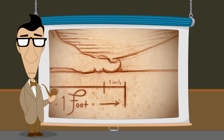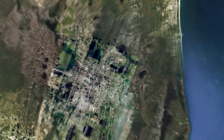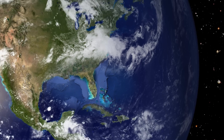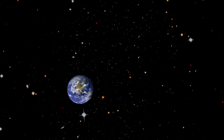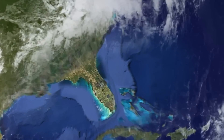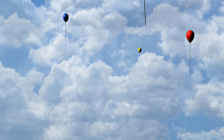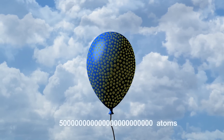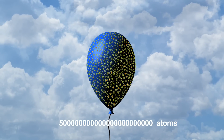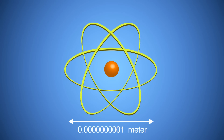However, science and technology have expanded the range of our measurable universe far beyond the human scale. Today we must work with numbers vastly larger than anything the Romans had to deal with. For instance, the distance to the nearest star is 25 trillion miles. The number of atoms of gas in a toy balloon is about 500 sextillion. And the size of one of those atoms is about one ten-billionth of a meter.